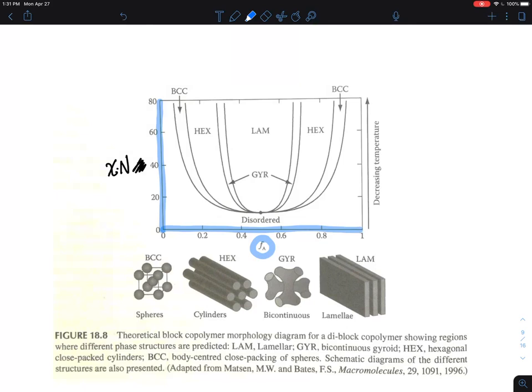At this position, this is what is called the critical chi N, known as 10.5, and this position is 0.5.